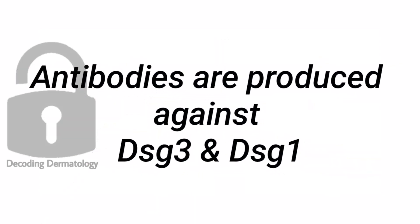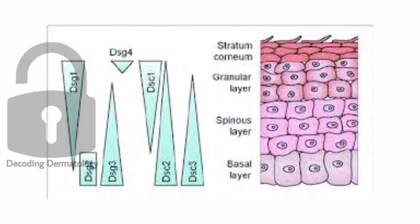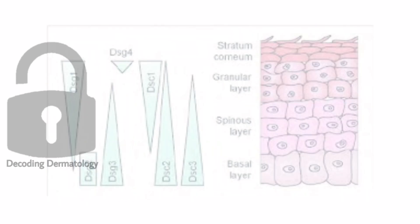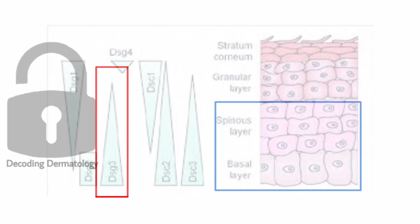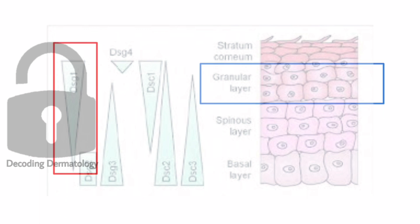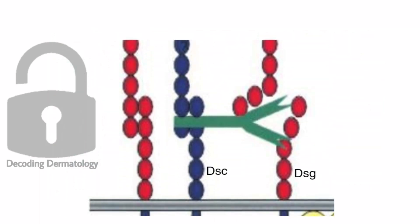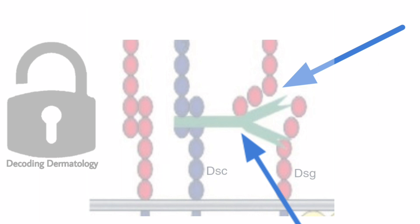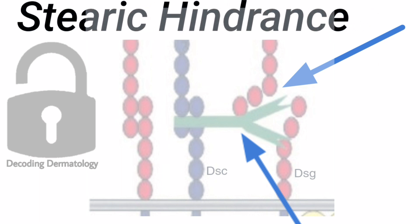In pemphigus vulgaris, antibodies are produced against desmogleins, especially desmoglein 3 and desmoglein 1. Desmoglein 3 is distributed more in the basal and suprabasal region, while desmoglein 1 is seen more in the subcorneal region. When IgG antibodies attach to the desmogleins, it causes disruption of the attachment between the desmogleins by mere steric hindrance.